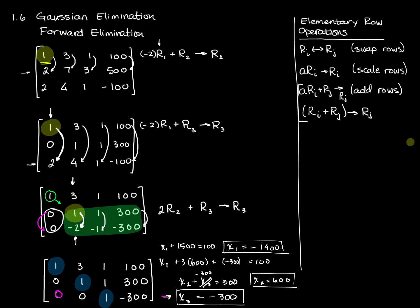So the fact that this is in echelon form lets me take that last step, if there's a solution, and figure out what that solution is. I can also write this in the form negative 1400, 600, negative 300.